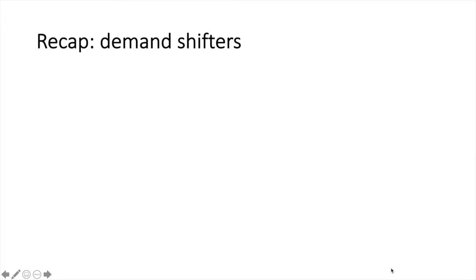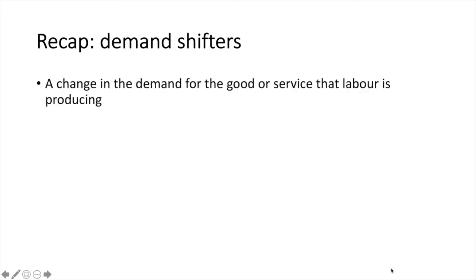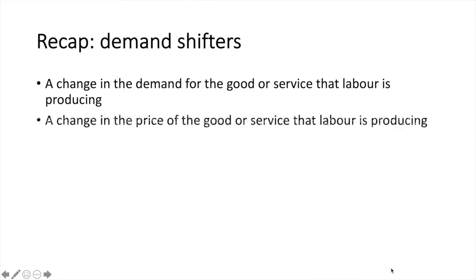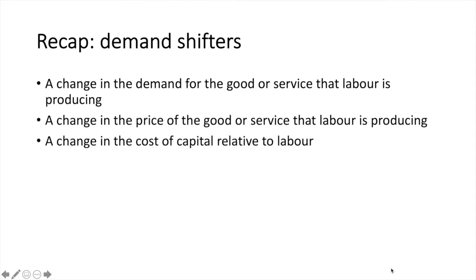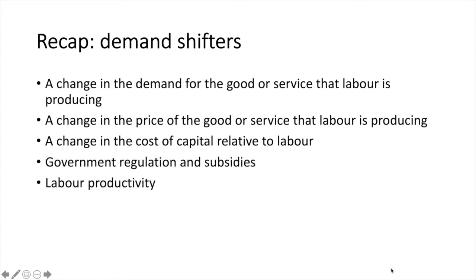I've listed the demand shifters I covered in an earlier video here. If you want to go back and review them again, find the video and then come back to watch the rest of this one. The factors that might cause the demand for labour to shift include a change in the demand for the good or service that labour is producing, a change in the price of the good or service that labour is producing, a change in the cost of capital relative to labour, government regulation and subsidies, and labour productivity.